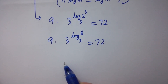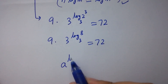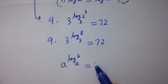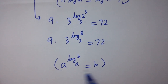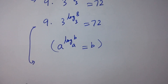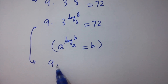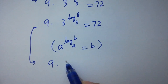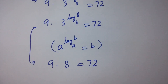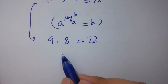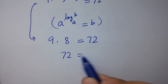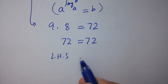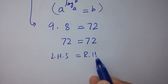Since a to the power log b to the base a equals b, we have 3 to the power log 8 to the base 3 equals 8. So 9 times 8 equals 72, which equals 72. Left hand side equals right hand side.